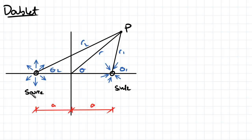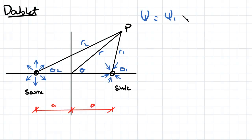What you need to imagine is that each of these points has concentric circles — your equipotential lines from each point. You will also get your streamlines from that point. Because streamlines and velocity potential are linear functions, the total streamline is just going to be equal to the streamline of 1 plus the streamline of 2.